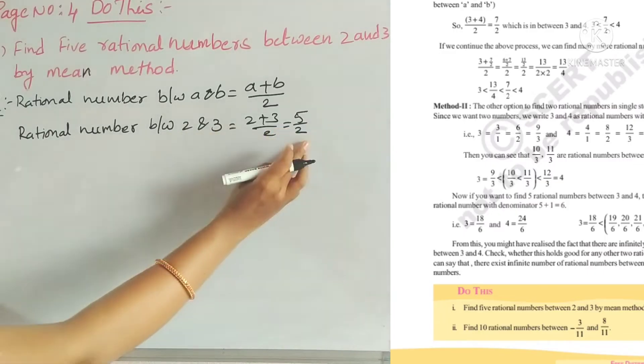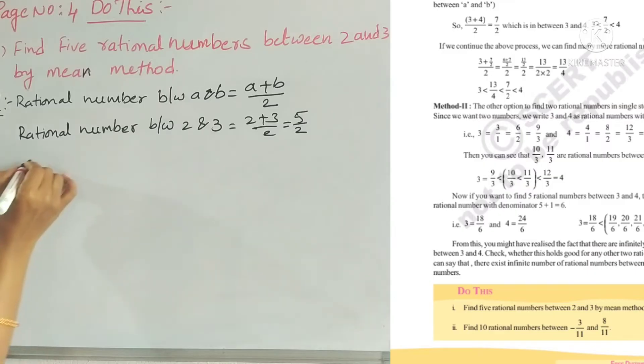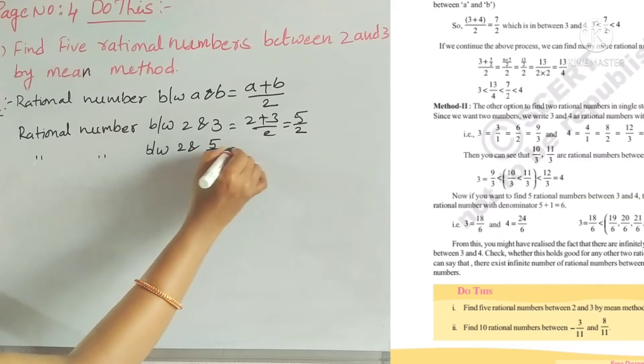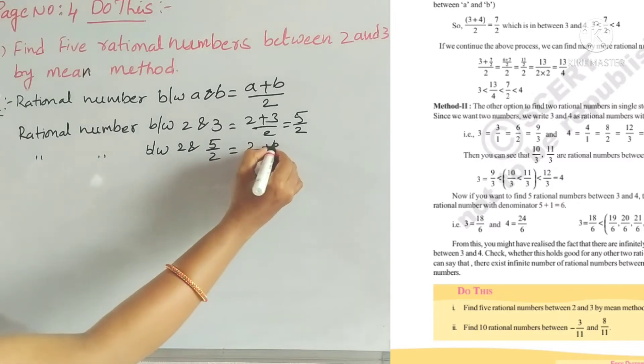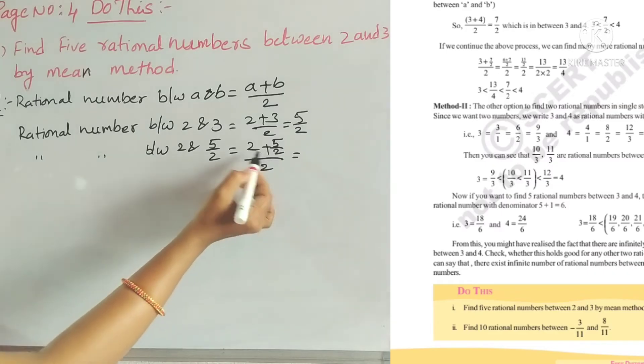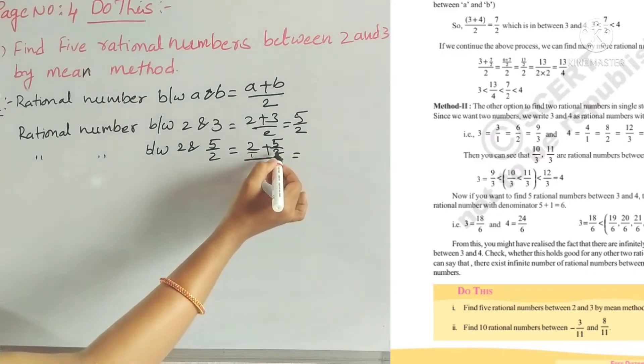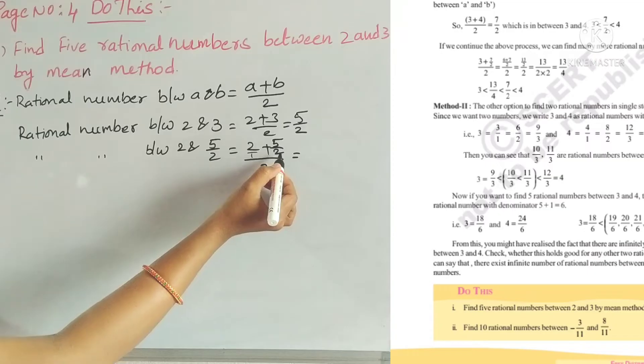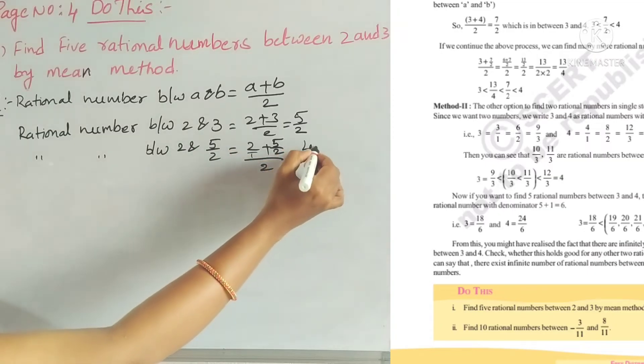We got 5 by 2. Now we need to find another rational number between 2 and 5 by 2. So we take 2 and 5 by 2, which gives us (2 times 2 is 4, plus 5) divided by (2 times 2), which equals 9 by 4.